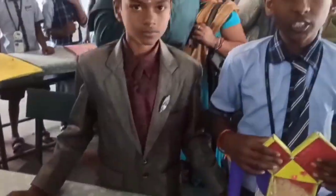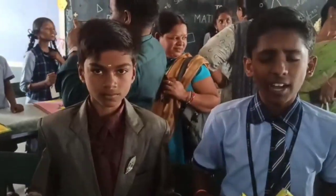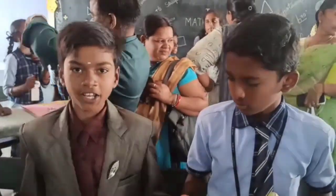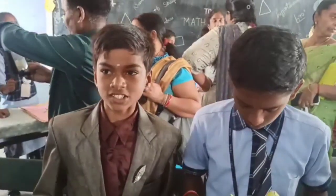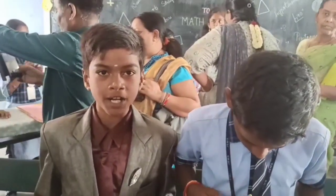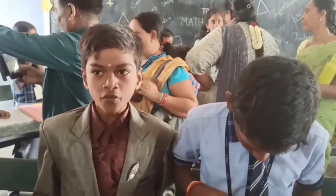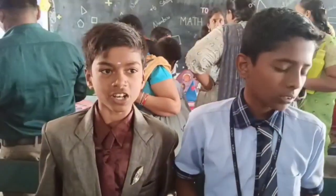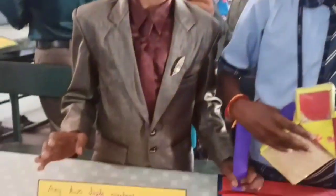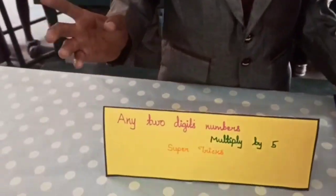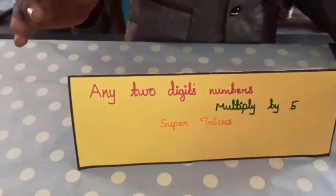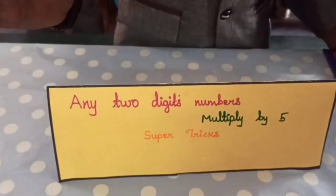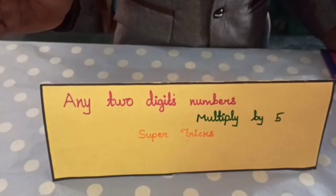Any number multiplied by 5? For example, 62 — half is 31. Therefore, we can add 0, so the answer is 310.